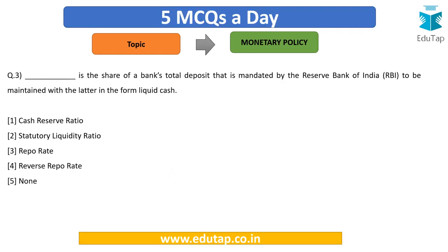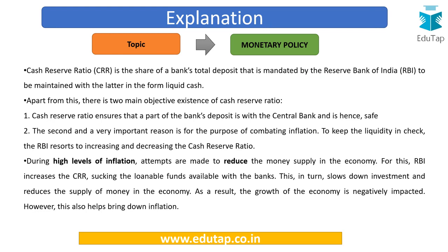The third question: dash is the share of a bank's total deposits that is mandated by the Reserve Bank of India to be maintained with the RBI in the form of liquid cash. The answer is Cash Reserve Ratio. Cash Reserve Ratio is the share of a bank's total deposits that is mandated by the RBI to be maintained with the RBI in the form of liquid cash.